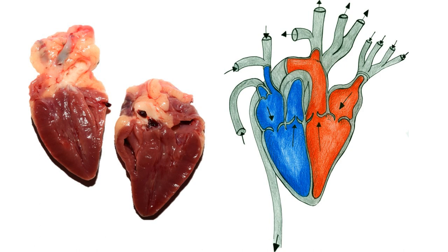After the organs have been supplied, the blood enriched with carbon dioxide returns through the upper and lower vena cava into the right atrium. When the blood enters the right ventricle from the right atrium, the cycle begins again.